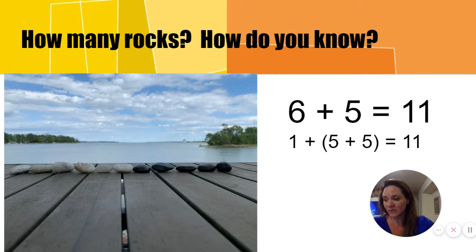We can think about breaking the six rocks into two groups, one and five, and add a double, because doubles are easier to add. And then we just need to add on the one more. It's a lot easier to think five and five is ten, plus one more makes eleven, than to try and solve six plus five.